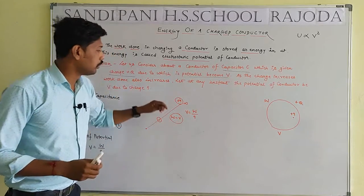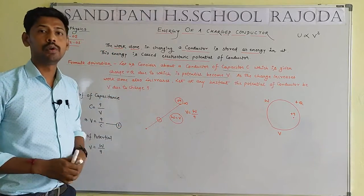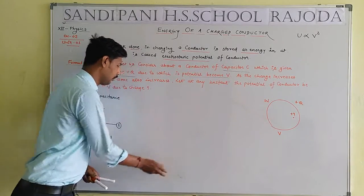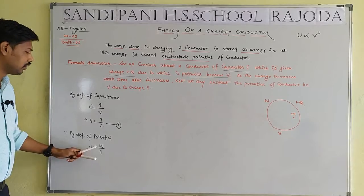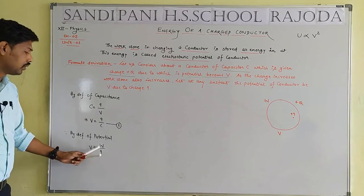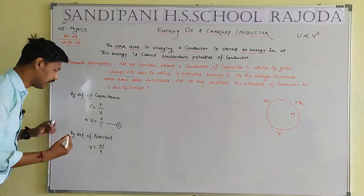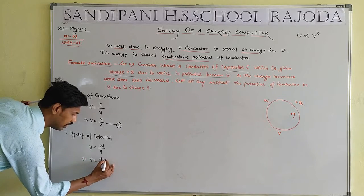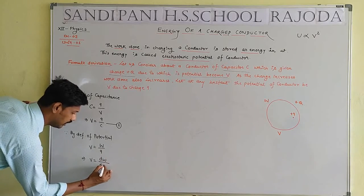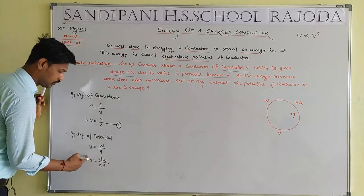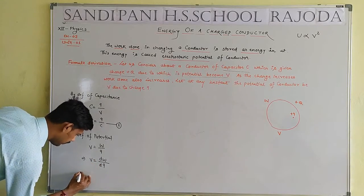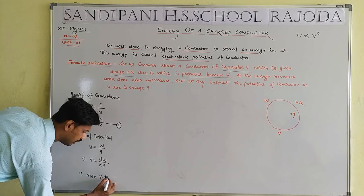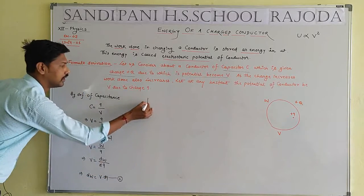In potential difference, both points are present in the electric field. We get V equal to W by Q. For small amounts, this becomes dV equals dW and dQ. By cross multiplication, we get dW equal to V into dQ — this is Equation Number 2.